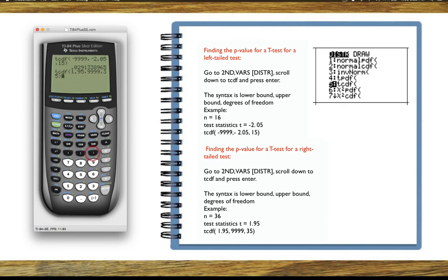Close the parentheses and press enter. The p-value is 0.0296 depending on your rounding rules.